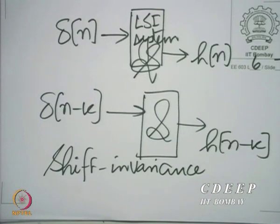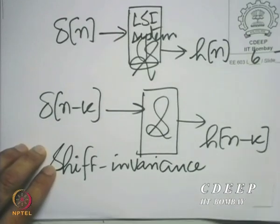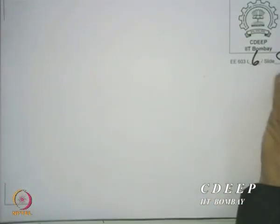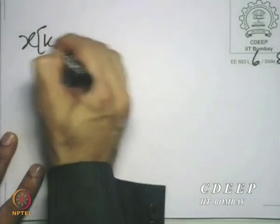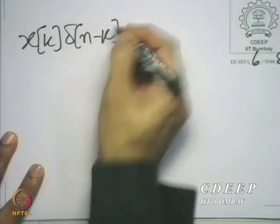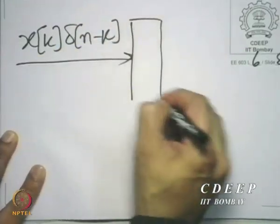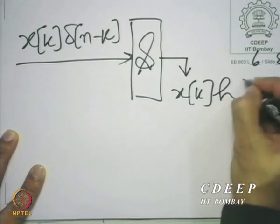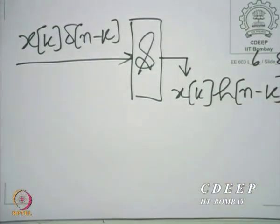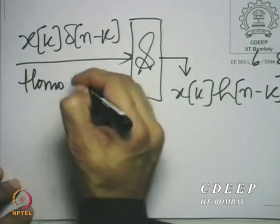We now invoke homogeneity. x(k)·delta(n−k) — remember, x(k) is a constant — x(k)·delta(n−k), when applied to the same system, is therefore expected to produce x(k)·h(n−k). Note again: h(n−k) is a sequence, x(k) is a constant. The interpretation must be very clear at every step. Here we have invoked homogeneity, or scaling.